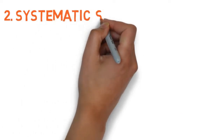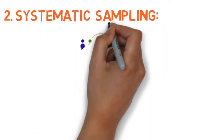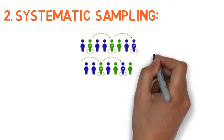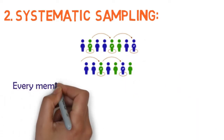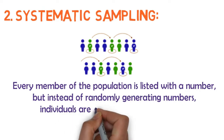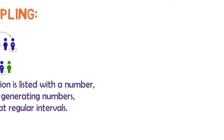Number two, we have systematic sampling. Systematic sampling is similar to simple random sampling, but it is usually slightly easier to conduct. Every member of the population is listed with a number, but instead of randomly generating numbers, individuals are chosen at regular intervals.